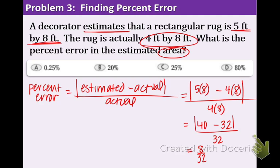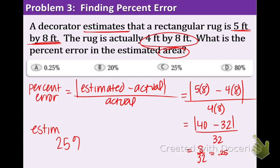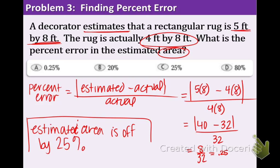When we reduce that, we get 1 fourth or 0.25. What we need to do is multiply by 100 to put it in percent form, so we get 25%. We can write that the estimated area is off by 25%, and that's actually a significant amount of error. So I'd be wary about this decorator if I were you.